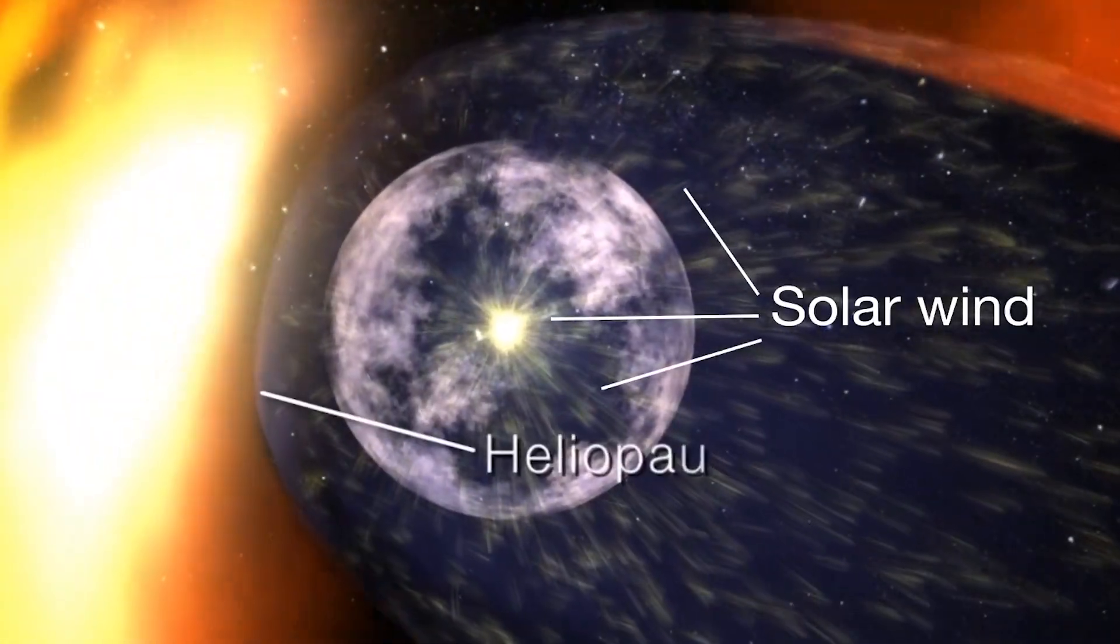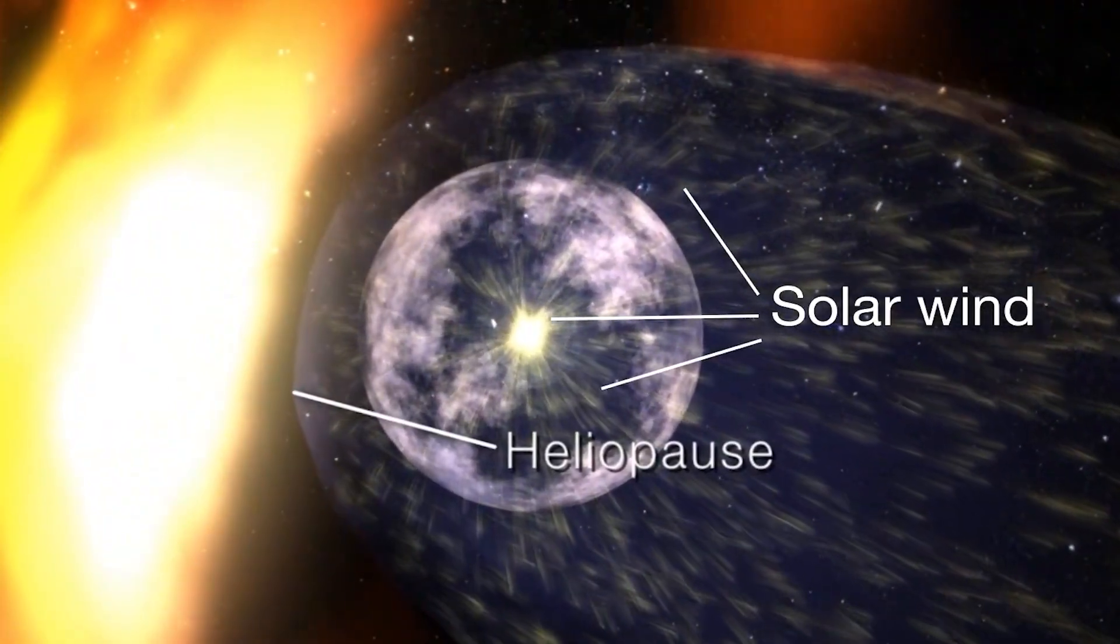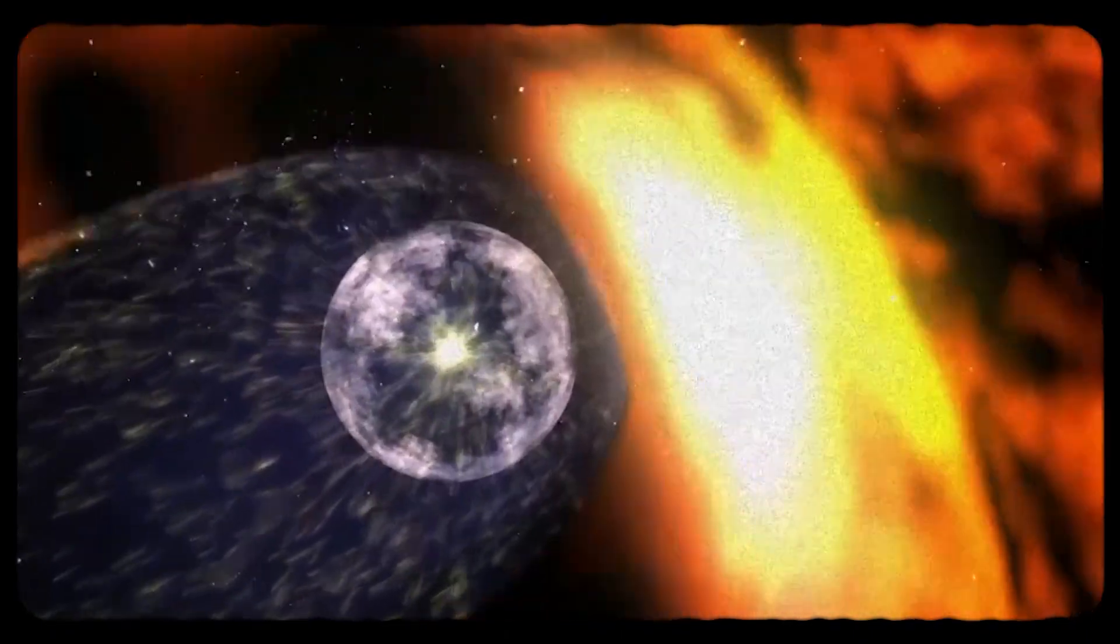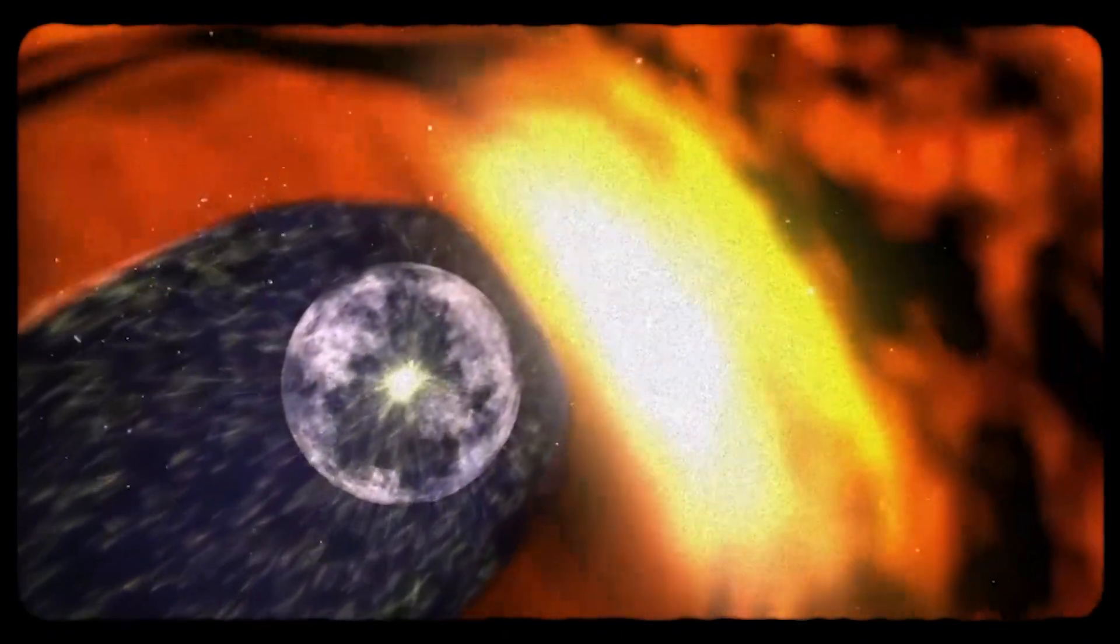This boundary, known as the heliopause, marks the point where the solar wind, charged particles streaming out from the sun, can no longer push against the opposing pressure of the interstellar medium.